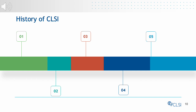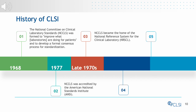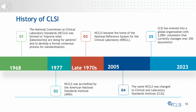Here is a brief history of CLSI. The organization was originally established as the National Committee on Clinical Laboratory Standards, or NCCLS. Its focus was to improve patient care and to develop a more formal consensus process to standardize laboratory practices. NCCLS was accredited in 1977 as a voluntary consensus standards organization. In the late 1970s, NCCLS became home for the NRSCL, a collection of reference systems. In 2005, NCCLS was changed to CLSI. Today, CLSI is made up of over 1,400 member organizations and 500 individuals from around the world, with over 2,000 volunteers and manages a library of over 250 documents and products.